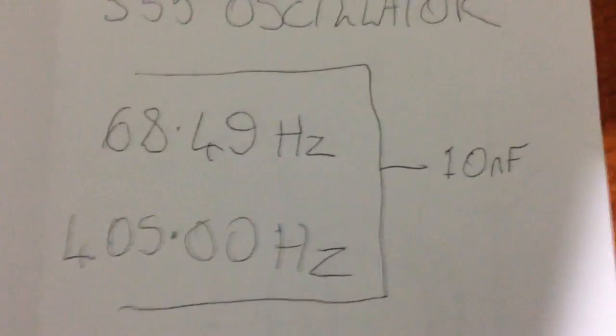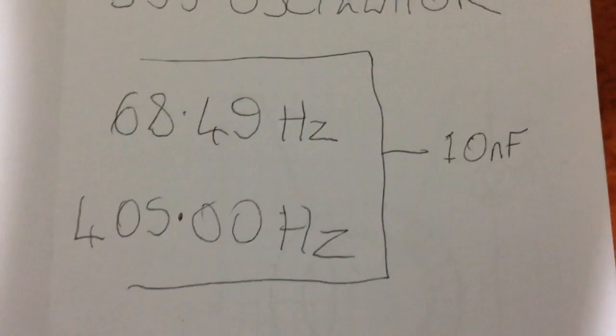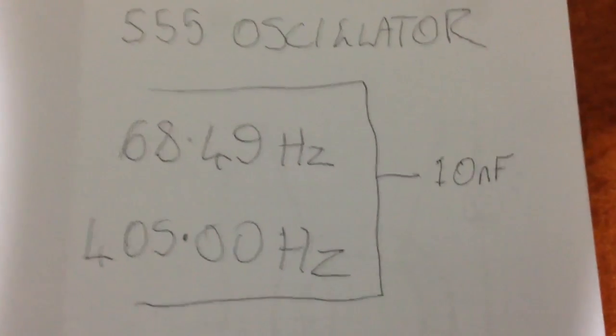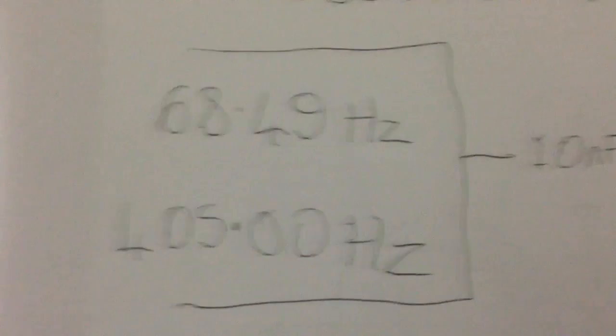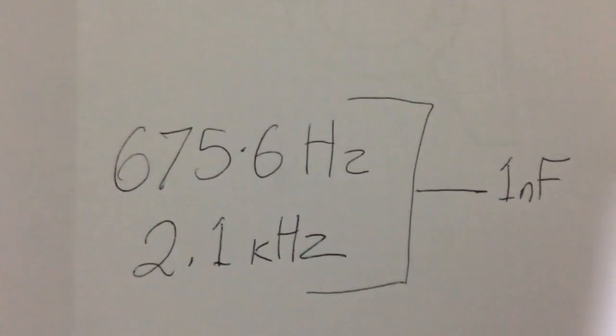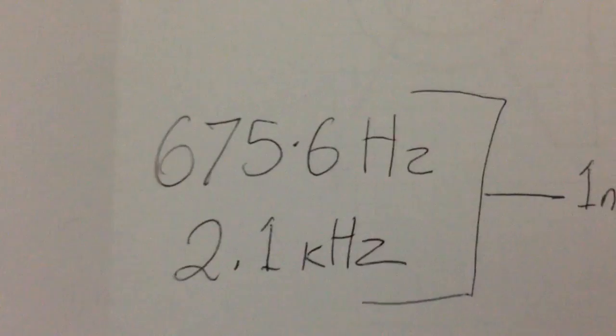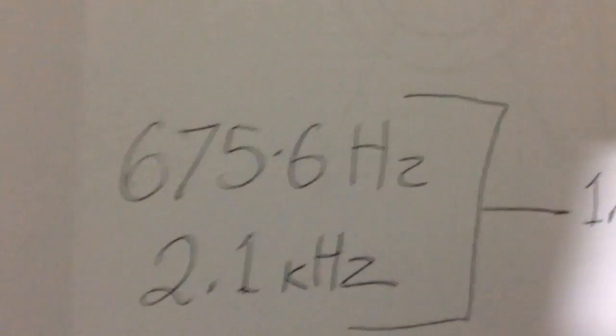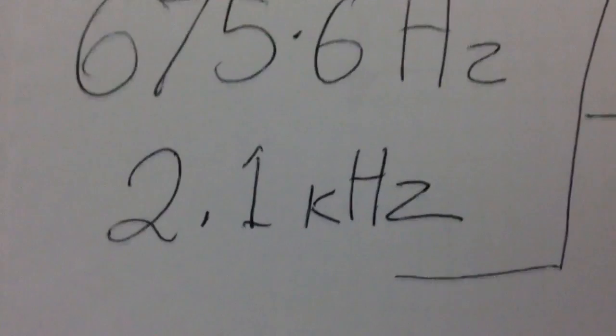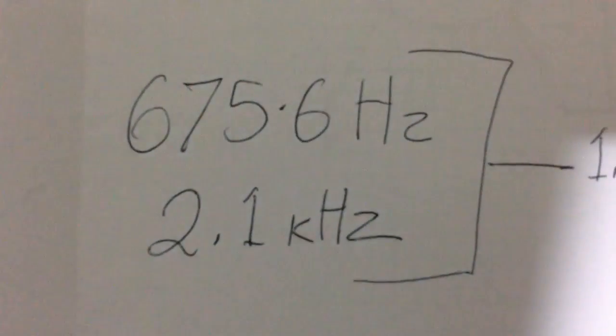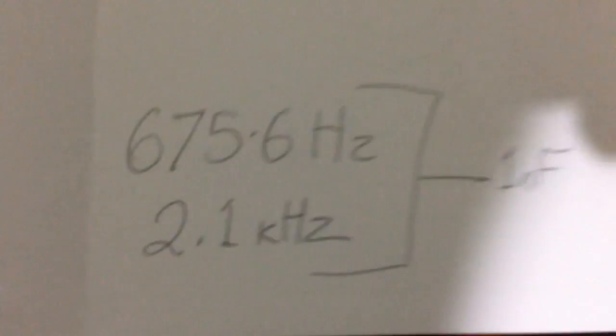I made one small change to the schematic I found on the web for the 555 oscillator. The 10 nanofarad capacitor gave me a pretty low frequency range there and just by lowering that value to 1 nanofarad that not only increased the range but also the highest speed, so 2.1 kilohertz is the highest sort of stable frequency I can get out of it at the moment.